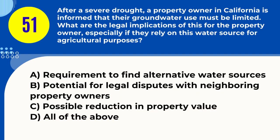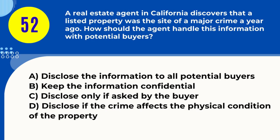Question 51. After a severe drought, a property owner in California is informed that their groundwater use must be limited. What are the legal implications for the property owner, especially if they rely on this water source for agricultural purposes? A. Requirement to find alternative water sources B. Potential for legal disputes with neighboring property owners C. Possible reduction in property value D. All of the above. Answer: D. All of the above. Explanation: Limitations on groundwater use may lead to finding alternative sources, disputes with neighbors, and a potential reduction in property value.